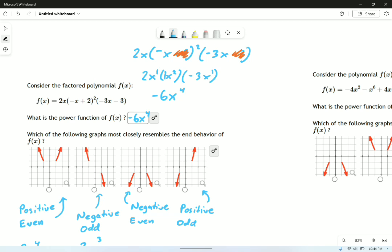So the power function is negative 6x to the 4th. The full polynomial, if I had multiplied it all out, would have been a whole bunch of other stuff I just don't care about. So which one of these end behaviors is it? Well, this is negative even, right? Negative 6, and the exponent is even. So there we go.